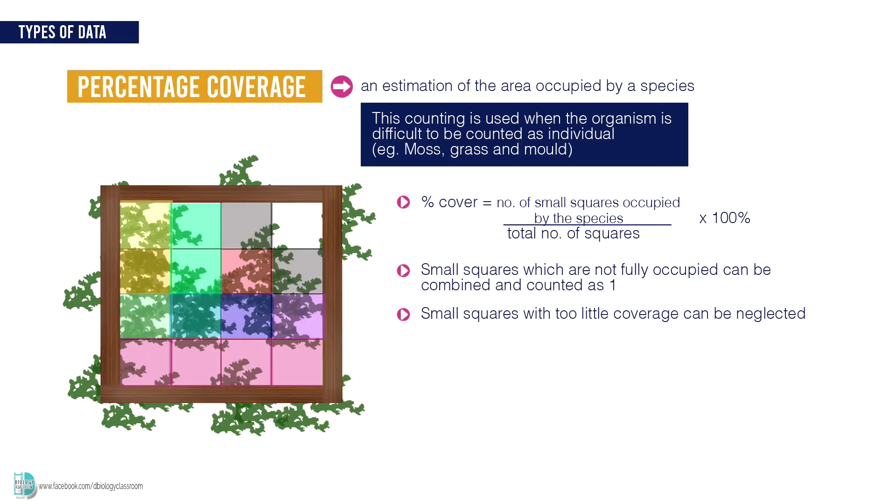In my example, since there are 9 squares out of 16 covered by this plant, the percentage coverage of it is about 56%.